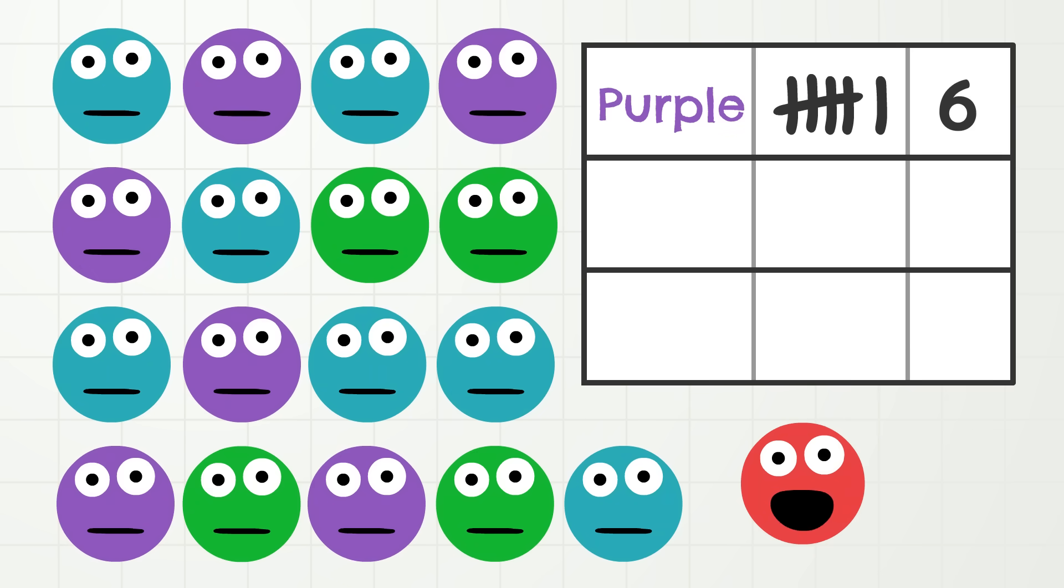Okay, moving on! The next color is green. How many brothers and sisters are green? Let's count. One, two, three, four! Four!